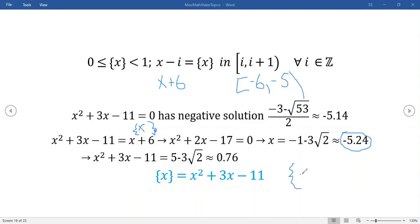The fractional piece of minus 5.24 is equal to 6 minus 5.24 right.